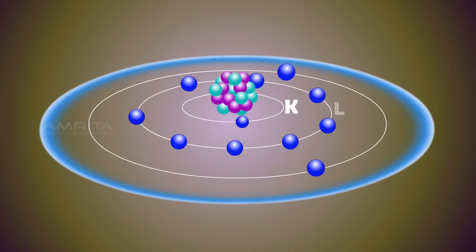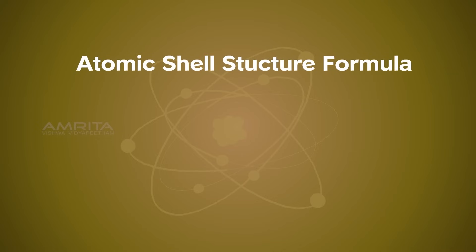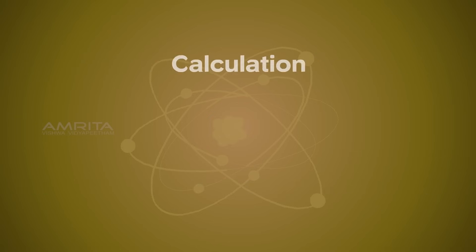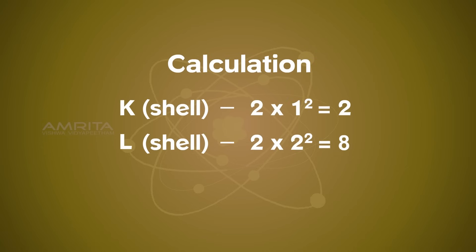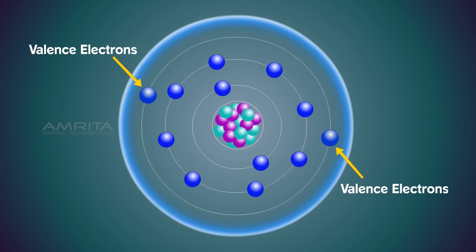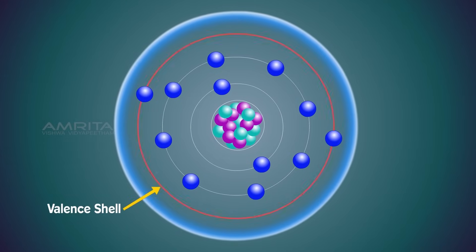The orbits or shells are represented by the letters K, L, M, etc. The maximum number of electrons present in a shell is given by the formula 2n², where n is the orbit number of energy shells. The first orbit or K shell can have 2, the second orbit or L shell can have 8, and M shell can have 18 electrons. The electrons present in the outermost shell of an atom are called valence electrons, and the shell which valence electrons occupy is called the valence shell.